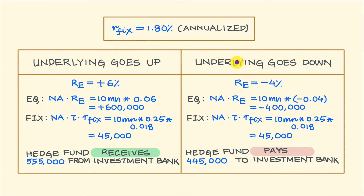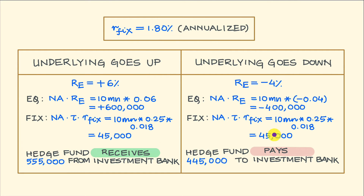If during the three-month settlement period the underlying had gone down by 4%, then the equity-linked cash flow would be the notional amount of 10 million times minus 4%, giving you a cash flow of minus 400,000. Minus here means the hedge fund will have to pay this cash flow rather than receive it. The fixed cash flow is still 45,000. From the hedge fund's perspective, these two cash flows are aggregated, and on a total basis the hedge fund would need to pay 445,000 to the investment bank.